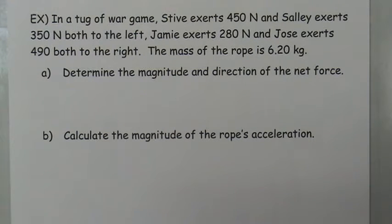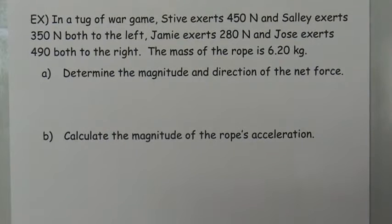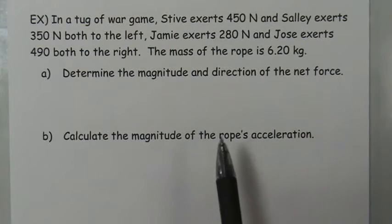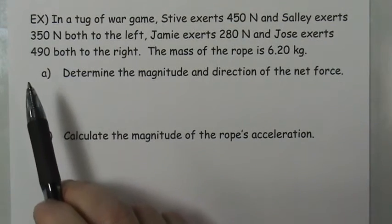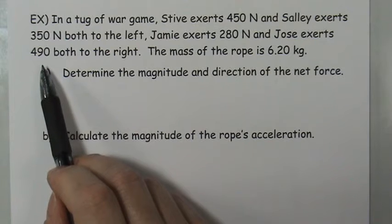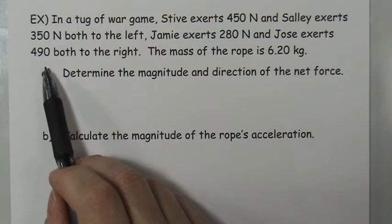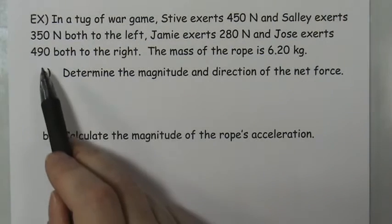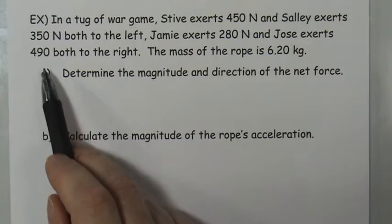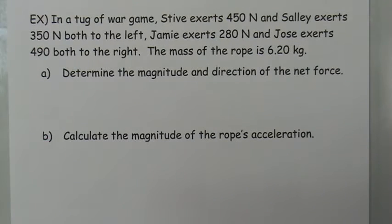In the first example, let's return to the first law video where we looked at a tug of war between Steve and Sally, and between Jamie and Jose. In that one, Jose required 520 Newtons to bring the system to equilibrium, causing the rope to travel with constant velocity. But in this case, Jose is only exerting 490 Newtons to the right, which unbalances the rope and causes a net force to the left, and therefore an acceleration to the left.